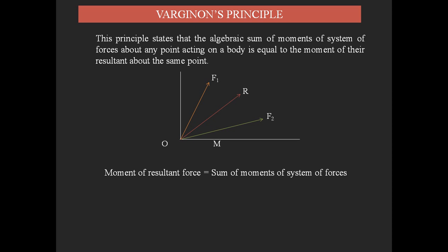The sum of moments of F1 and F2 becomes equal to the moment of R. According to the definition, we need the perpendicular distance between the force and point M. Drawing the perpendicular lines: d2 is the perpendicular distance from M to F2, d1 is the perpendicular distance from M to F1, and d is the perpendicular distance from M to R. We can write: R × d = F1 × d1 + F2 × d2. This is the formula according to Varignon's Principle when two forces act on a point.